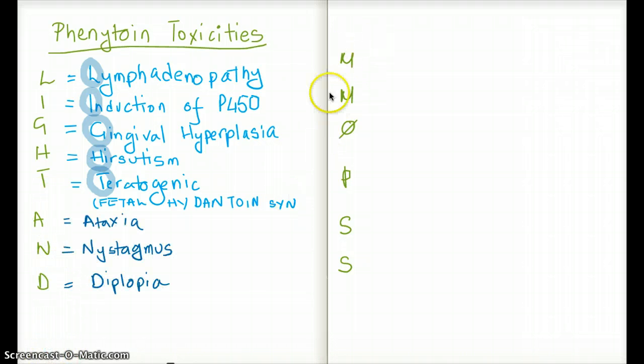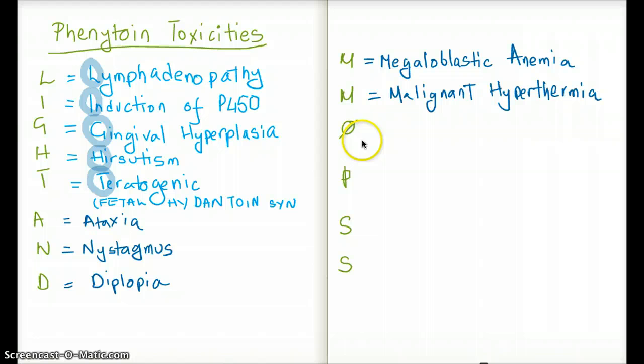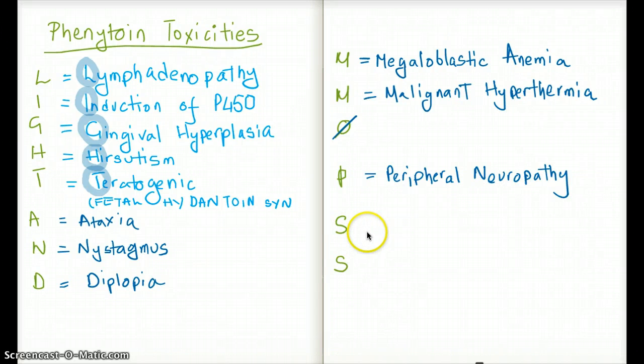Moving on to MOPS, you do have to keep in mind that there's two M's and there's two S's. LIGHT and MOPS. M stands for megaloblastic anemia. The second M stands for malignant hyperthermia. O really doesn't stand for anything. P stands for peripheral neuropathy. S stands for SLE, and the other S stands for sedation. And that's it.